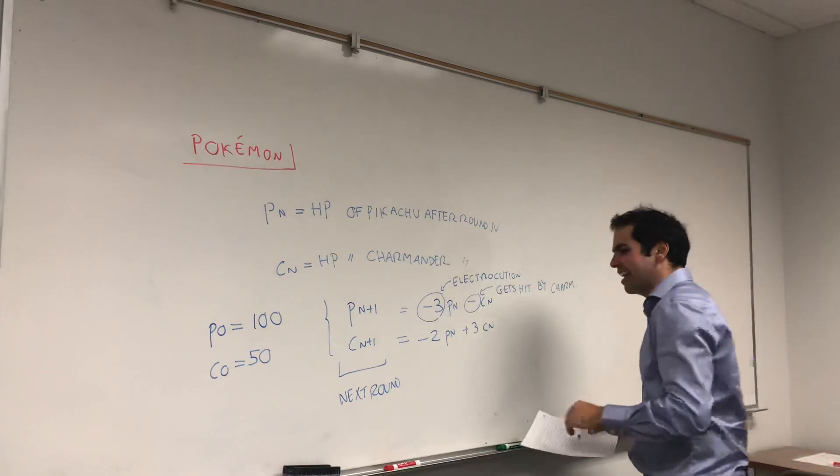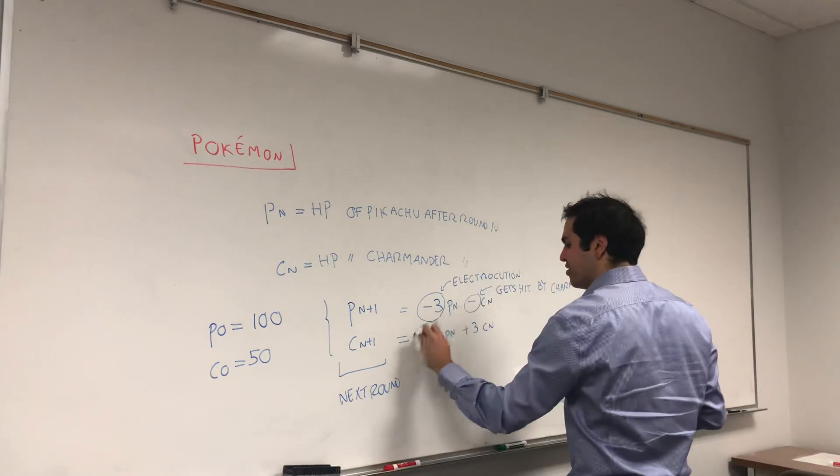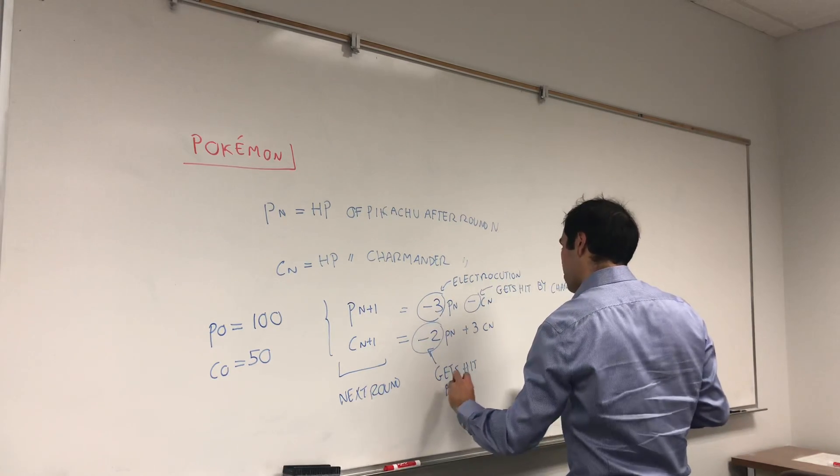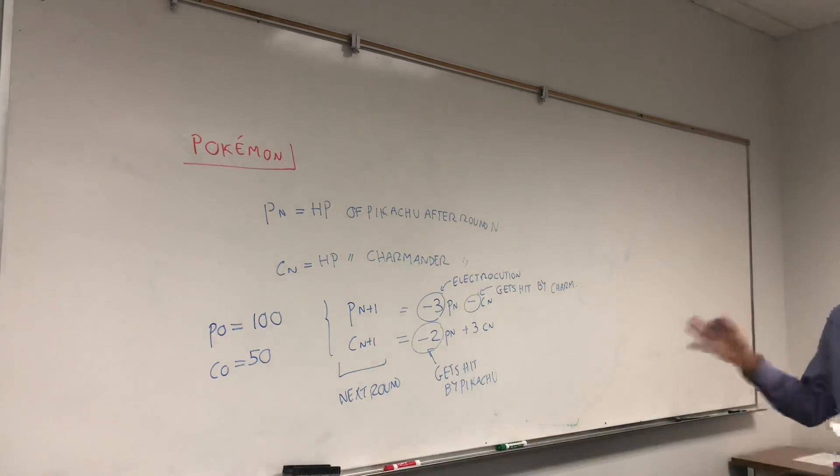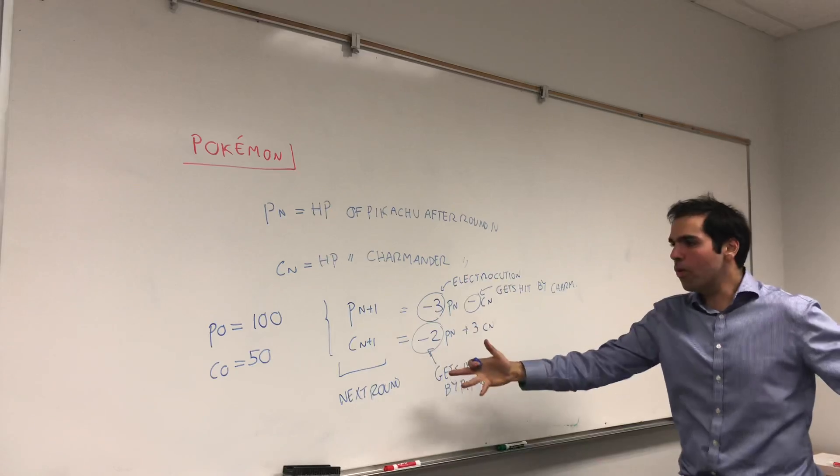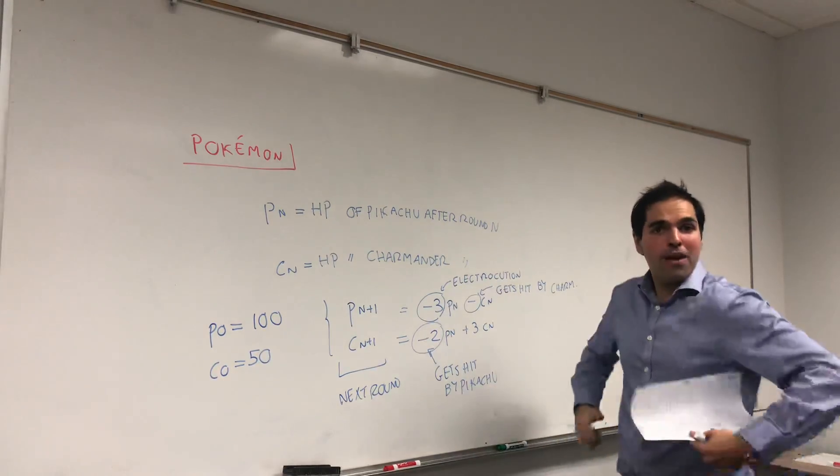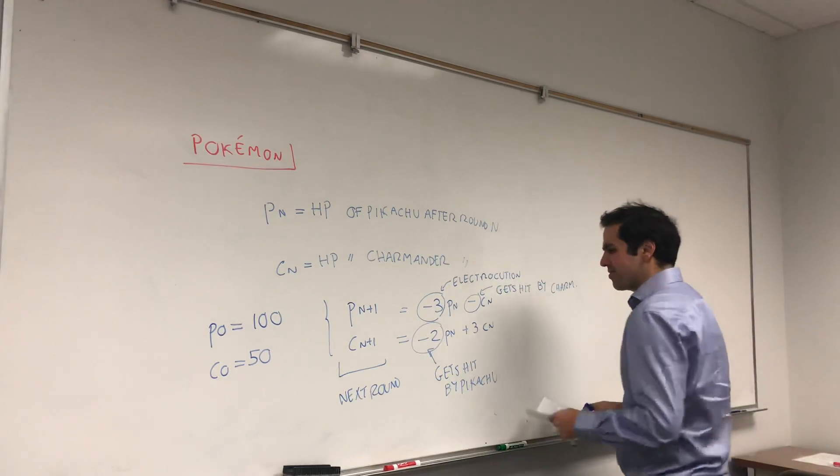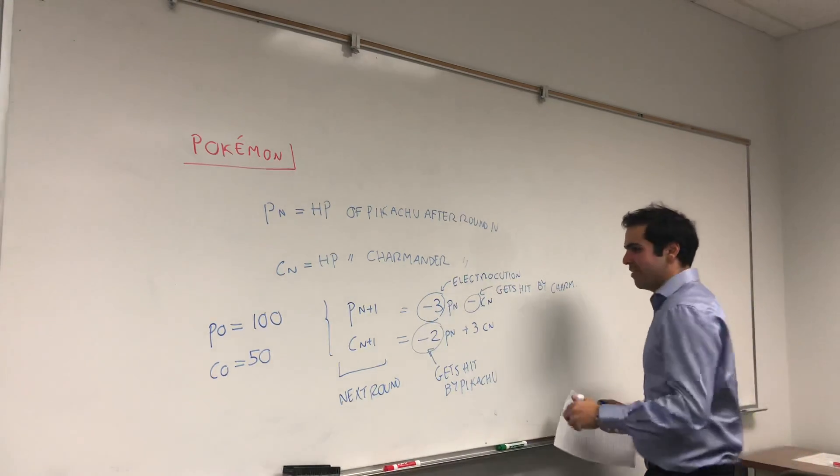PN plus 1 will be negative, but it's okay. Charmander isn't very smart. First of all, it gets hit by Pikachu. You might say, why is it related to the HP of Pikachu? Well, it makes sense because the stronger Pikachu is, so the more HP it has, the more Charmander will lose hit points. If Pikachu is in form, has like 200 HP and slams Charmander, then we have a problem. Whereas, if Pikachu is very weak, only has 10 hit points, then his hit won't be very effective.